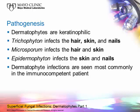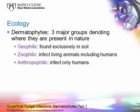Dermatophytes can also be grouped by their environmental source. There are three major groups: geophilic — found in soil; zoophilic — infecting living animals including humans; and anthropophilic — infecting humans only. This classification isn't used very often in the clinical lab but provides useful context.